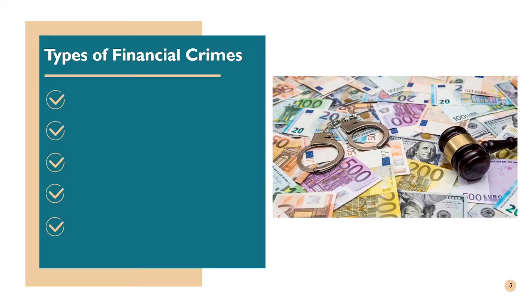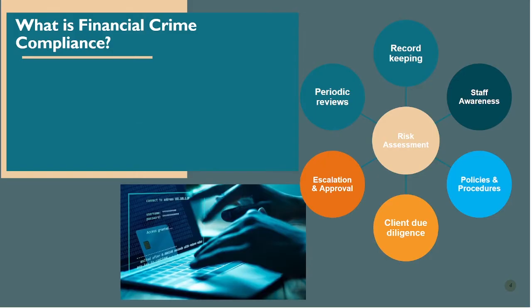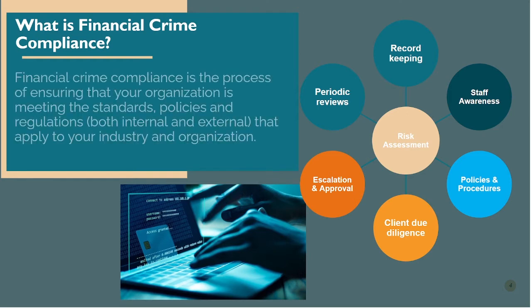So what are the different types of financial crimes? Money laundering, bribing and corruption, market abuse and insider dealing, fraud, data thefts and leakages.